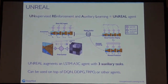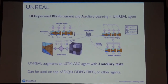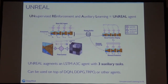This is the general overview of the agent, called the UNREAL agent — Unsupervised Reinforcement and Auxiliary Learning. The UNREAL agent augments a standard LSTM A3C agent, where A3C is Asynchronous Advantage Actor-Critic, with three auxiliary tasks: pixel control, value function replay, and reward prediction. These tasks are learned in parallel with the base policy, and everything is optimized together. Importantly, while we used A3C as the base policy, there's no reason you can't use these auxiliary tasks on top of any base RL algorithm like DQN, DDPG, or TRPO.